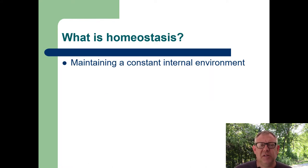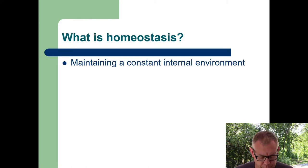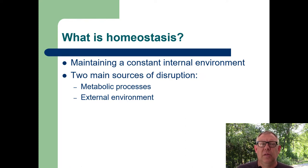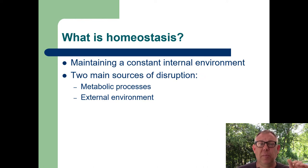Homeostasis is maintaining a constant internal environment. There are two main things that try to disrupt the internal environment of an animal: metabolic processes and the external environment. These two things are constantly trying to disrupt that internal environment. Homeostasis is the organism's response to try to maintain that constant internal environment.